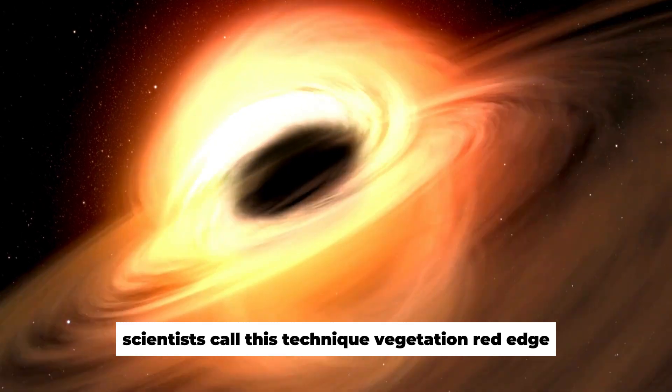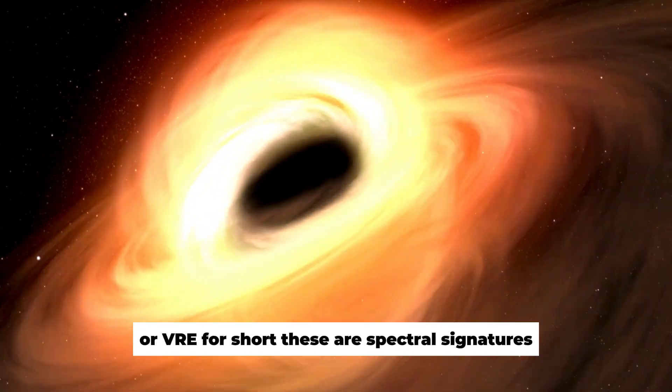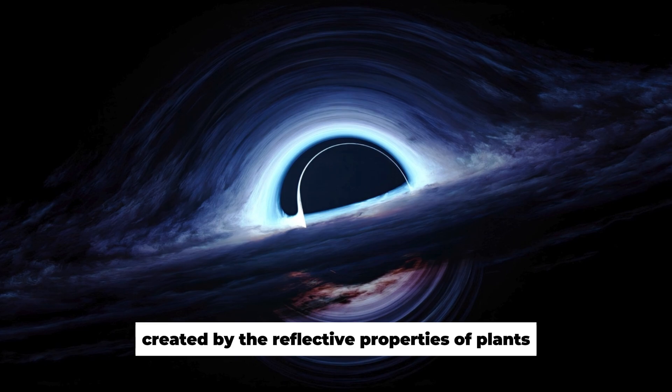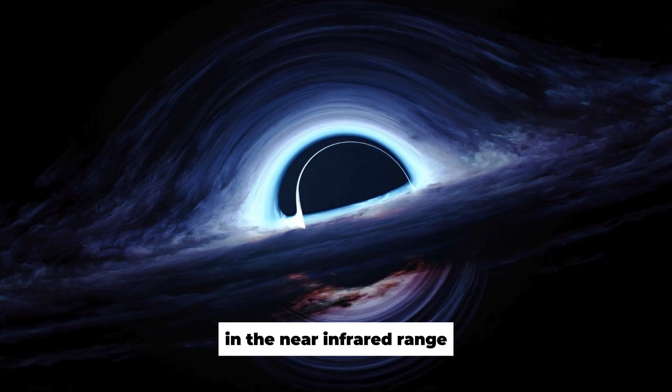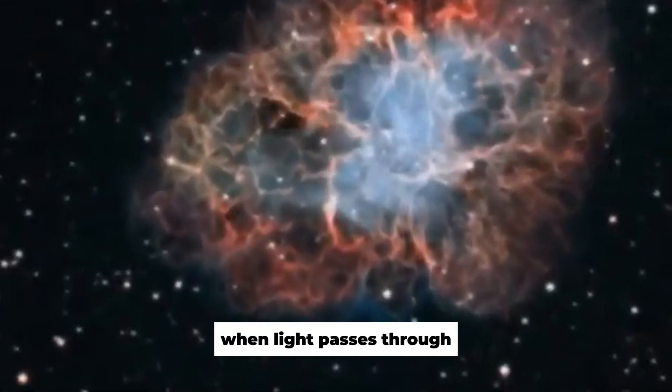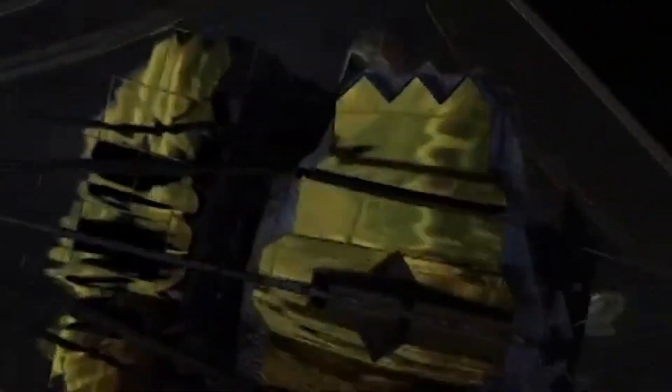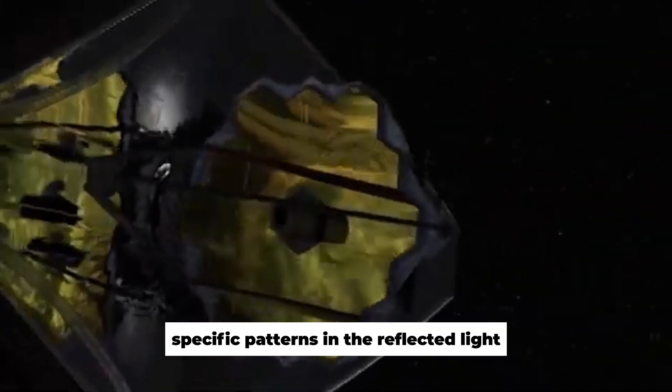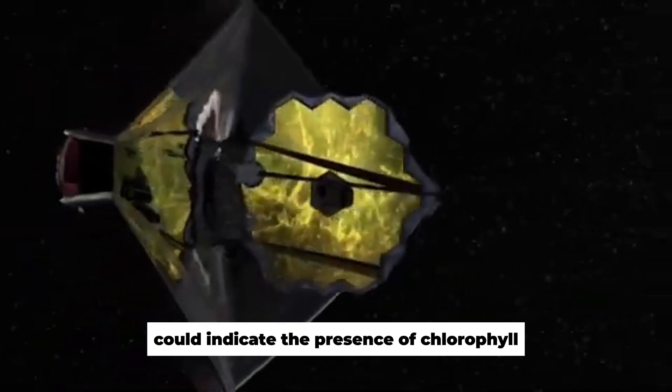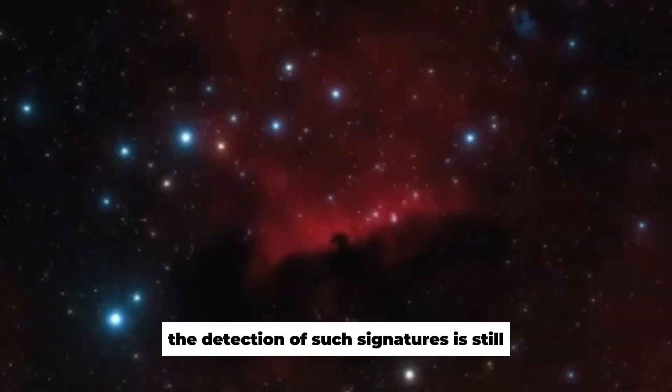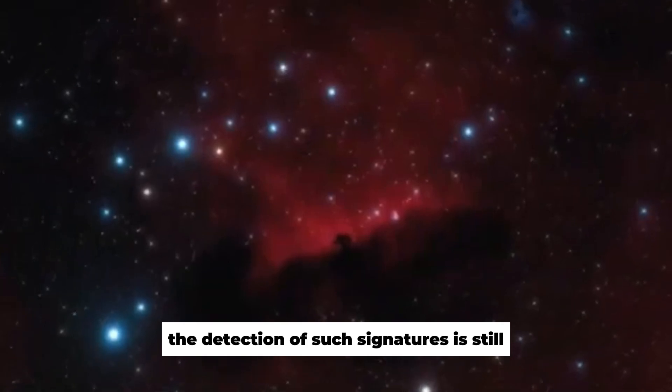The JWST can provide indirect evidence of plant growth by analyzing atmospheric constituents and reflected light spectra. Scientists call this technique vegetation red edge, or VRE for short. These are spectral signatures created by the reflective properties of plants in the near-infrared range. When light passes through the atmosphere of an exoplanet and is reflected by the surface, specific patterns in the reflected light could indicate the presence of chlorophyll or other photosynthetic pigments.